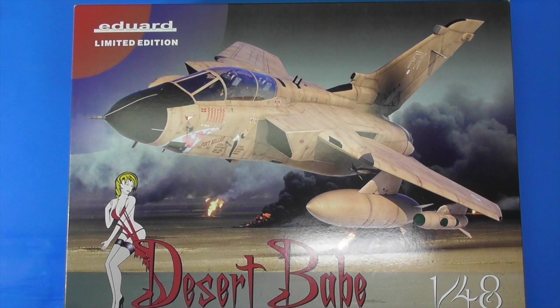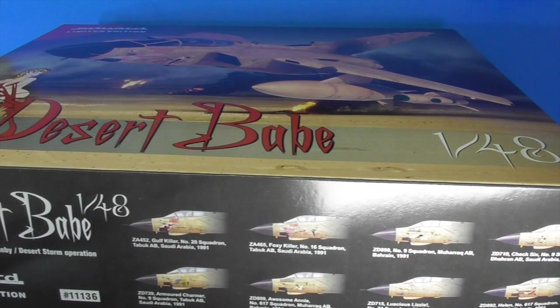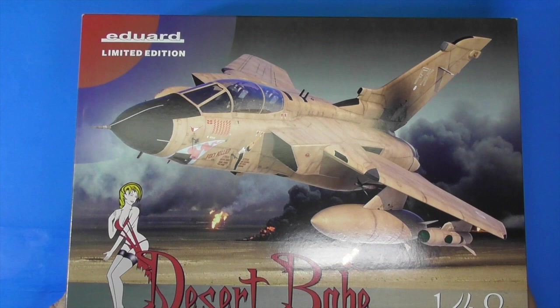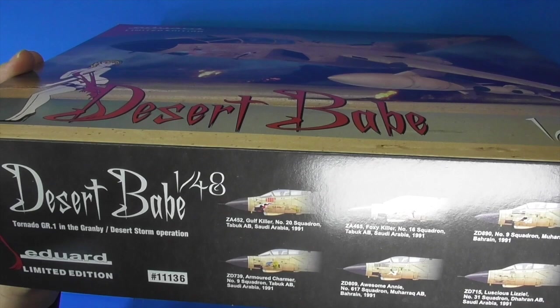Beautiful box art. I hope they do a print of that. So in this kit you get eight Desert Babe options and there are no extra sprues that Eduard sometimes sells. They've been discontinued because they all sold out, and this is going to be hard to get too because I think they're sold out already. But you can find them at various stores I think.